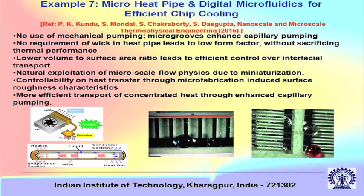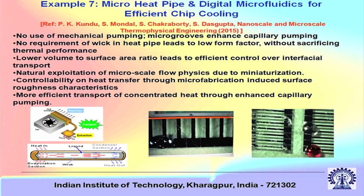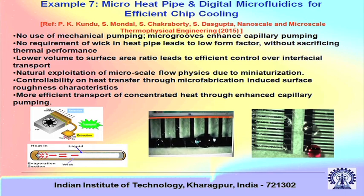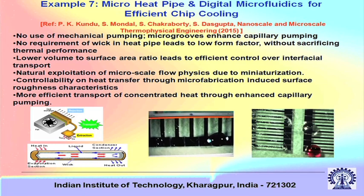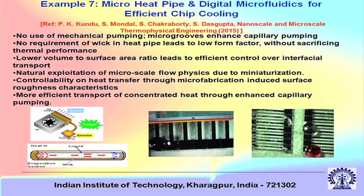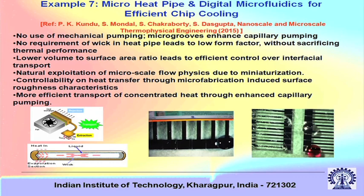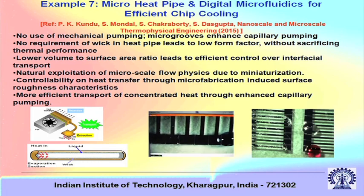Finally the droplet goes and sits on the hot spot and takes the heat. A good thing about the droplet is that it can take the heat in the form of latent heat, so there is no appreciable rise in temperature of the system. When the droplet takes the heat in the form of latent heat, it may be locally evaporated, and you replenish that by a new stream of droplets going to the hot spot. So it is possible to selectively address hot spots by targeting droplets to them — a very modern outlook of thermal management of electronic devices, and we have worked on implementing this for cooling of laptop computers.